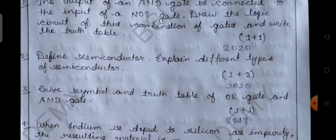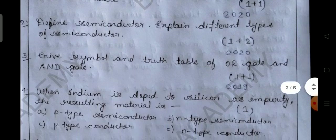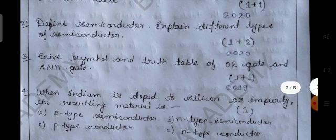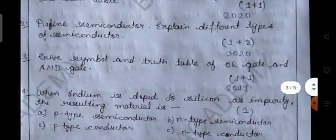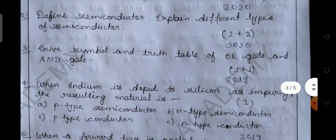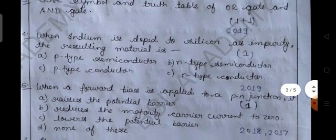Question number three: give the symbol and truth table of OR gate and AND gate. Truth tables are also very important, and this is a very easy topic, so please complete it and clear its concepts. This question is from 2019.